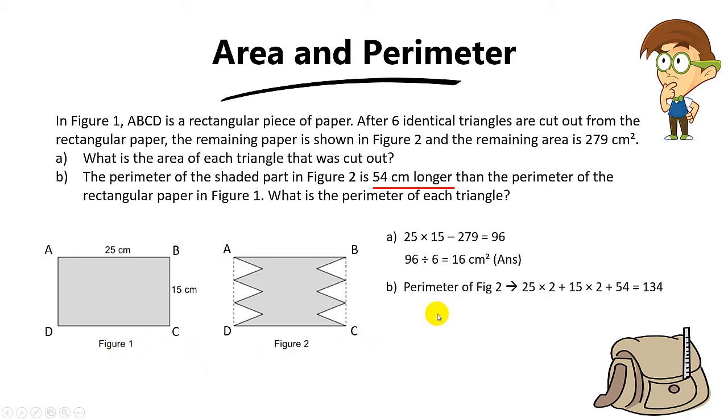If you are not sure what I mean, let me show you in a slow manner. The perimeter of figure 2 is basically the perimeter of figure 1, which is 25 plus 25, then plus 15 times 2, because it's 15 plus 15, then plus another 54 cm. That's because the perimeter of figure 2 is 54 cm more than the perimeter of figure 1. So the perimeter of figure 2 is 134.